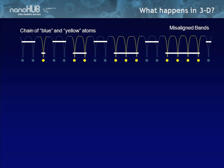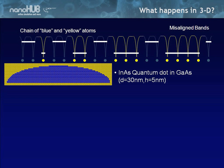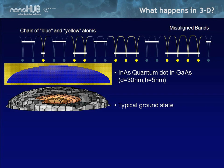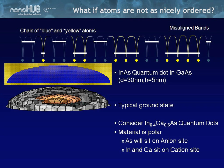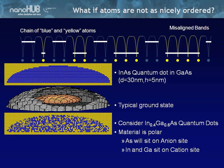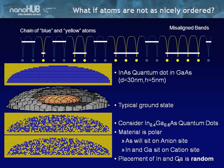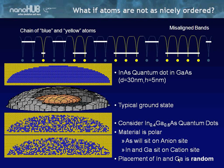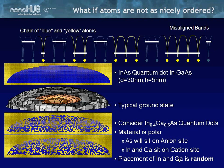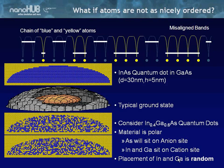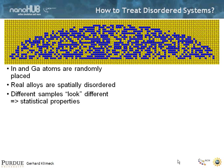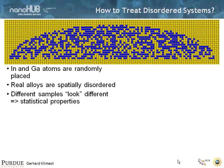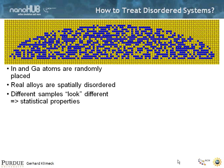Going back to this chain of blue and yellow atoms, we can ask ourselves: if we have an indium arsenide quantum dot of a defined diameter and height, we can calculate a typical ground state. We can now consider a disordered system — what if instead of pure indium arsenide in the quantum dot, we had indium gallium arsenide? We would have a disordered quantum dot. It is randomly disordered, and we don't have control over the placement of the indium and the gallium, so from sample to sample we will see something different. Real alloys are spatially disordered, and each sample looks differently.